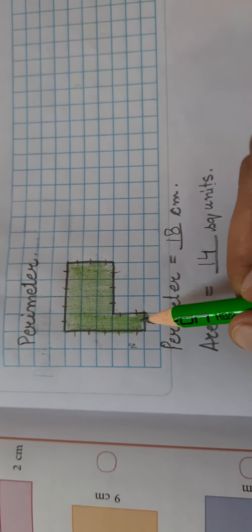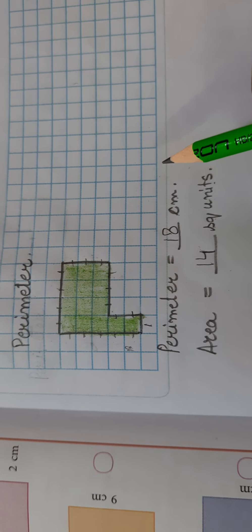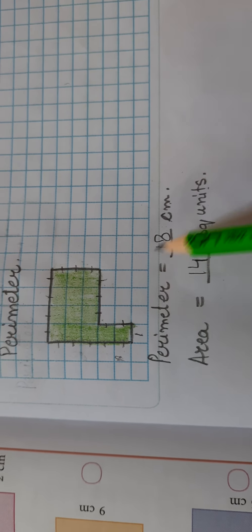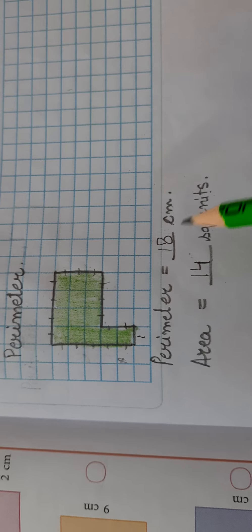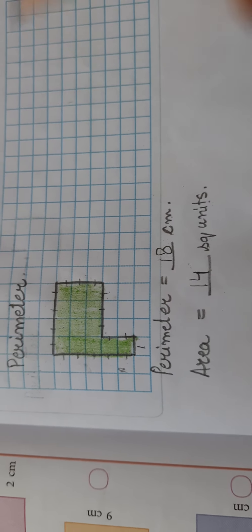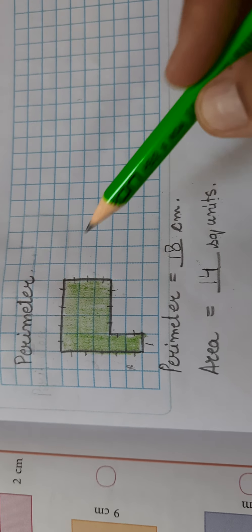Units means these blocks. So how many units are present in this shape? There are 14 square units. These are square in shape, so these are the square units. So this is how you can show any shape and you can show or count the perimeter and the area of that shape which you are going to draw on the square block sheet.